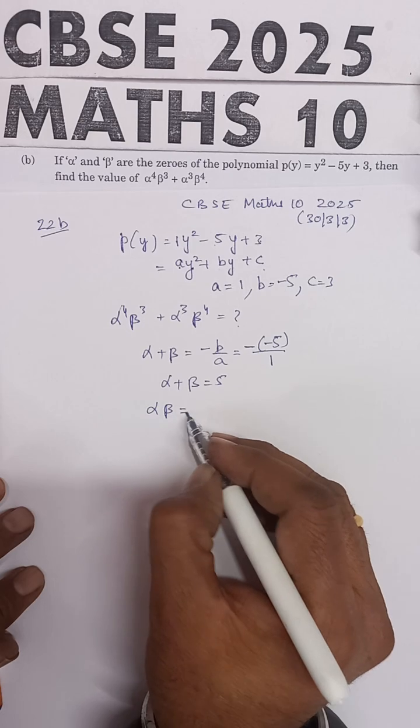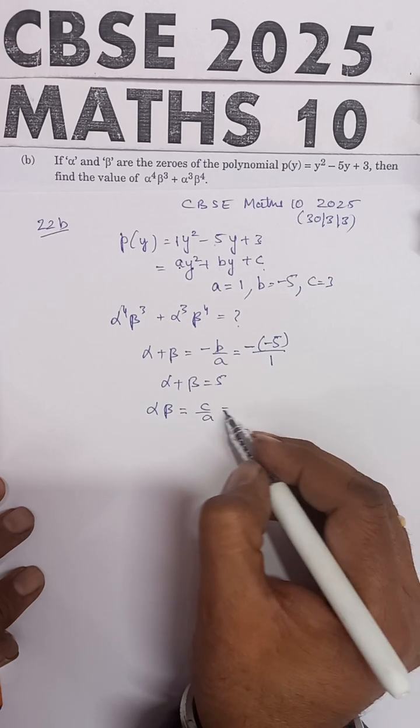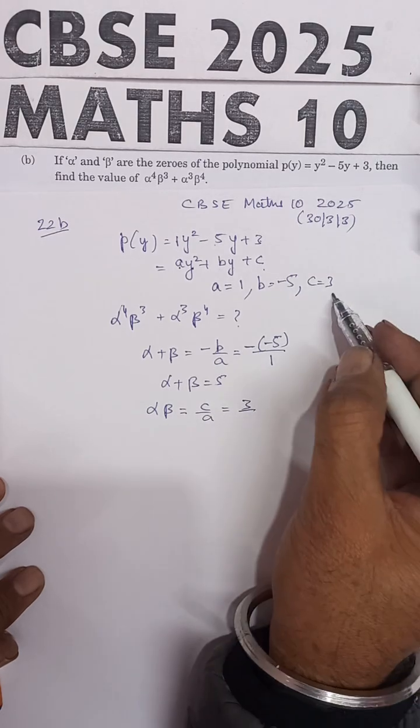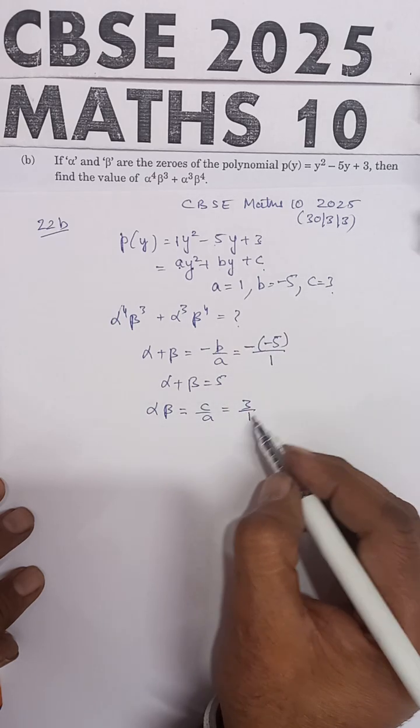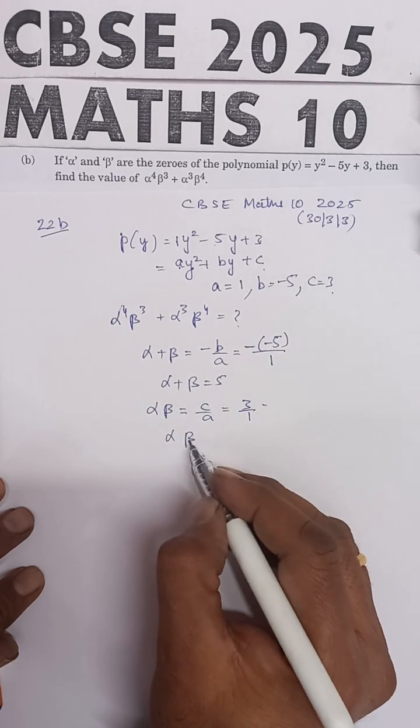Product of the zeros, alpha times beta, is C/A. This will be 3/1, so alpha times beta equals 3.